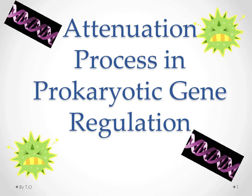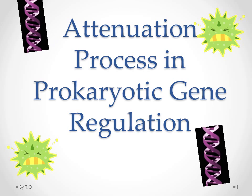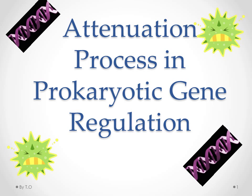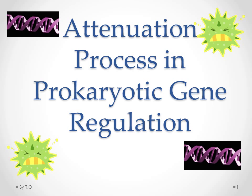The attenuation process is a way in which prokaryotes stop transcription of the structural genes after transcription has already occurred. In this animation, I'm going to use the TRIP operon as an example of the attenuation process in prokaryotic gene regulation.